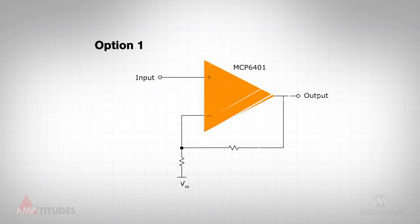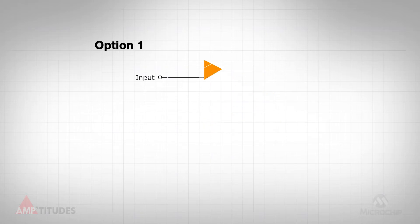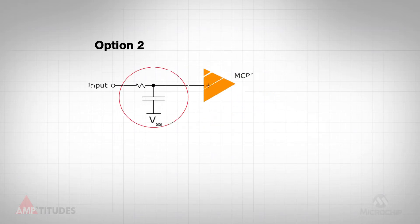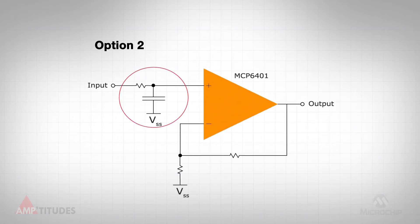This demonstration platform highlights three potential options. Option one is to rely on the inherent EMI rejection of a standard amplifier, in this case using the MCP6401 operational amplifier. Option two is to implement a low-pass filter external to the op amp.